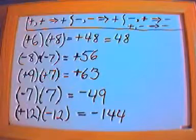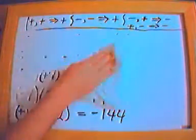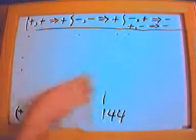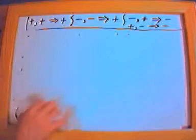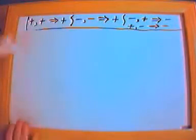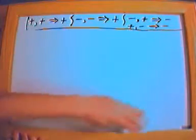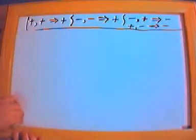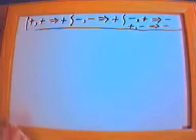All you need to do is keep the rules straight in your head. You can make yourself a little cheat sheet, and before long — working problem after problem — you'll basically memorize it. Positive times positive gives you a positive. Negative times negative also gives you a positive. The only time you get a negative is if you have one of each.